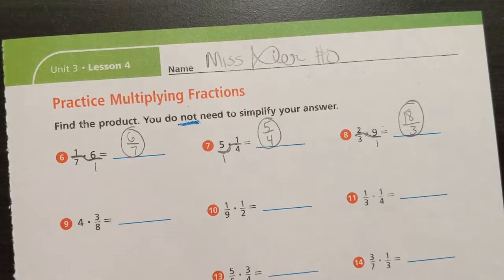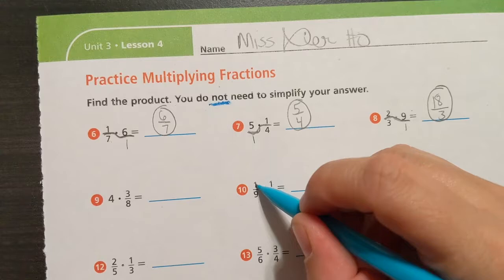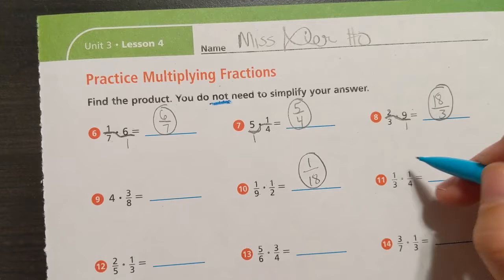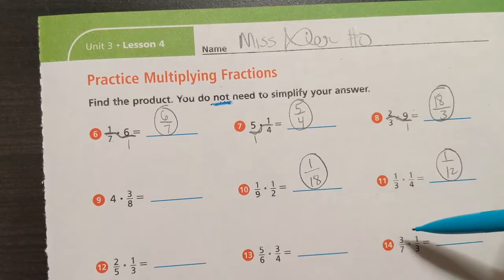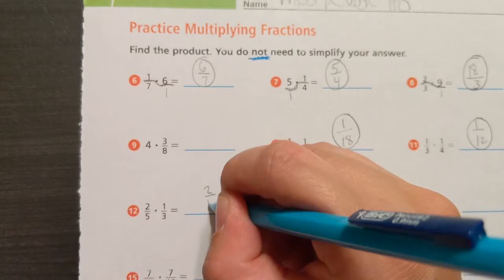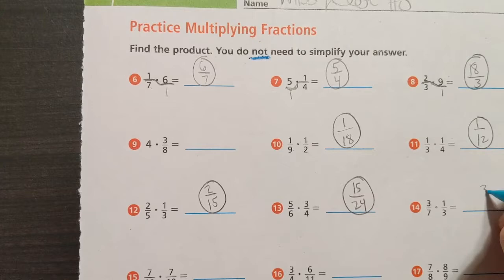Let's skip number nine. Do number ten. Oh, fraction by fraction. Multiply straight across. One times one is one. Nine times two is eighteen. Seriously, it's this easy. Number eleven. One twelfth. Why don't you do number twelve and thirteen and fourteen on your own. Pause the video. Come back and check it. Alright. You should be back and these should be your answers. Two fifteenths, fifteen twenty-fourths, and three twenty-firsts. Okay.